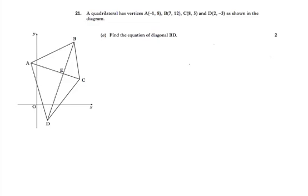Question 21, 2011 Higher Maths Paper 1. Part A asks us to find the equation of diagonal BD, given this diagram and the coordinates of four points on the diagram.